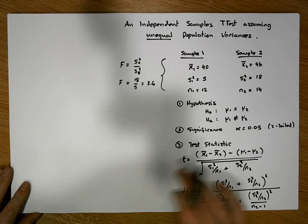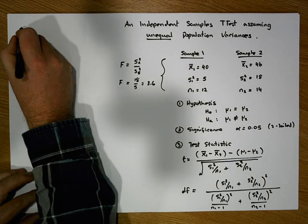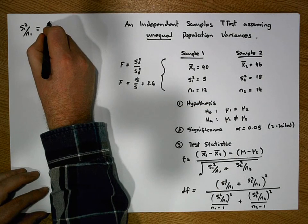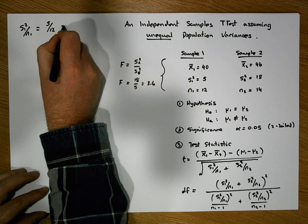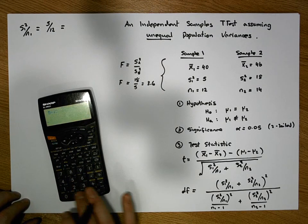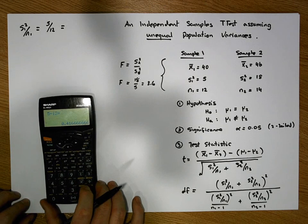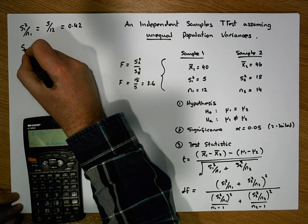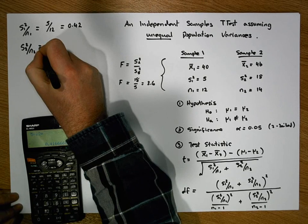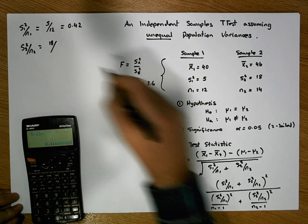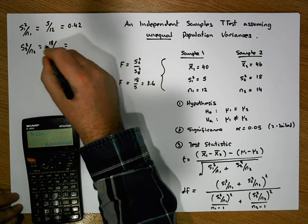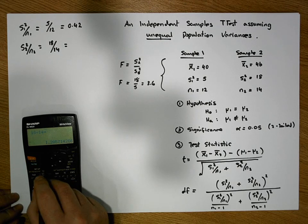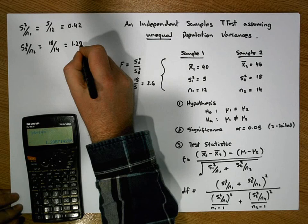Let's calculate the individual terms. First, s1-squared over n1: the first variance is 5 divided by the sample size of 12, giving approximately 0.42. Second, s2-squared over n2: the second variance is 18 divided by the second group sample size of 14, giving approximately 1.29.